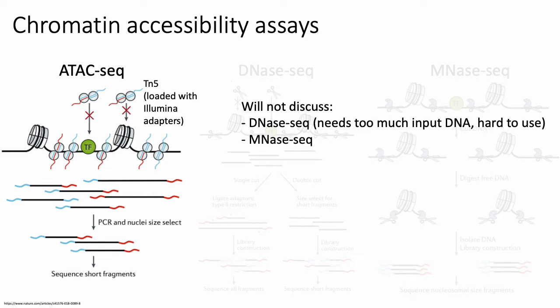ATAC-seq is generally the most widely adopted chromatin accessibility assay right now because compared to, for example, DNase-seq, it's more robust, more reproducible, and the protocol is generally pretty easy. Most importantly, the number of cells you need to get good ATAC-seq data is relatively small — for bulk ATAC-seq, you can perform this assay with as few as 500 cells, and the total experiment takes somewhere on the order of two hours. There's also a commercial product available to do even single-cell ATAC-seq.